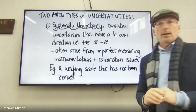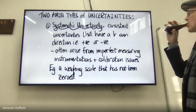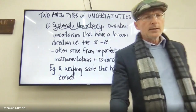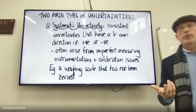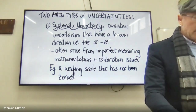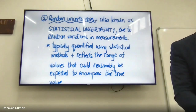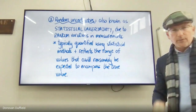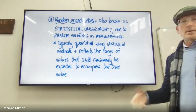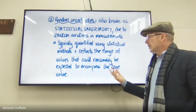There are two main types of uncertainties. Systematic uncertainty is consistent and has a known direction — positive or negative — and often arises from imperfect measuring instruments, like a weighing scale that hasn't been zeroed. Random uncertainty, also known as statistical uncertainty, is due to random variations in measurements and is typically quantified using statistical methods like standard deviation.